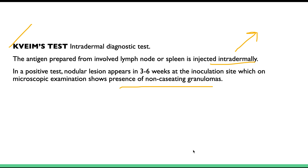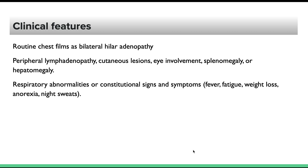Sarcoidosis is always a diagnosis of exclusion — excluding other granulomatous diseases and matching the symptoms. Clinical features depend on which organ is involved. On routine chest X-ray, bilateral hilar lymphadenopathy may be seen. Peripheral lymphadenopathy, eye involvement, skin involvement, hepatomegaly, and splenomegaly can all be present depending on organ involvement.